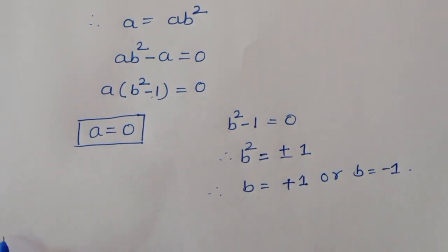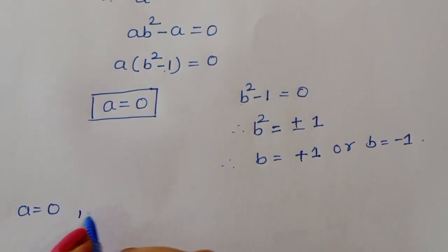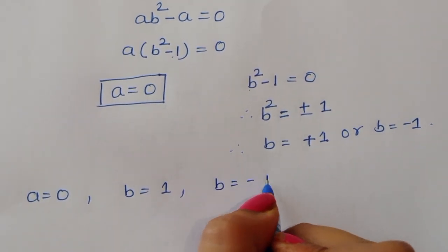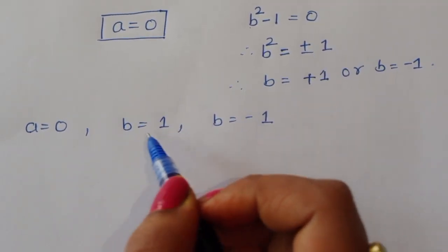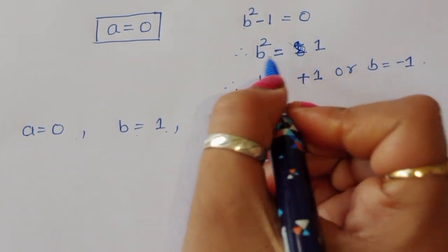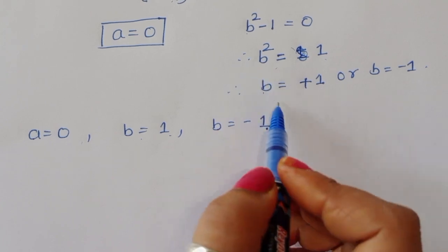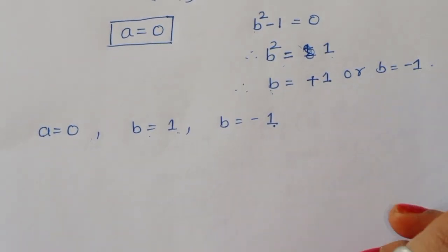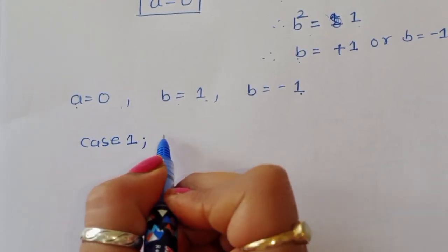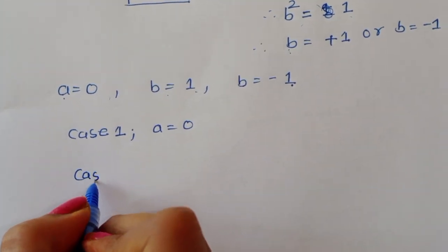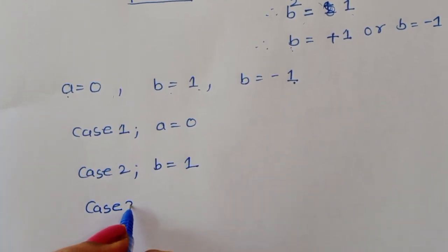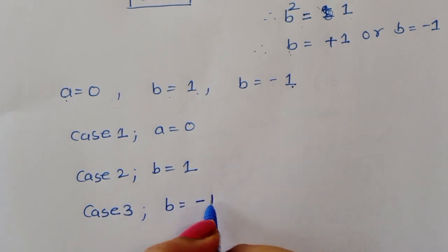So we have three cases: Case 1: a = 0. Case 2: b = 1. Case 3: b = -1.